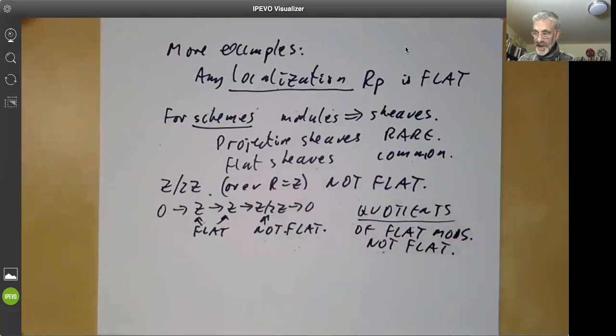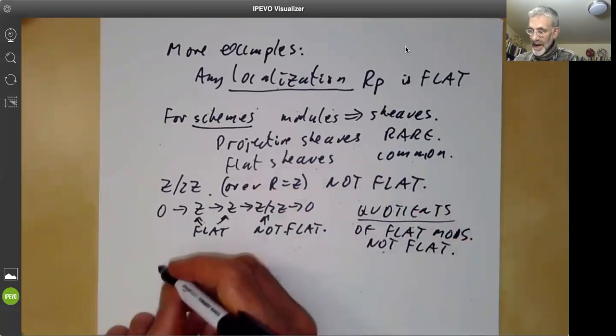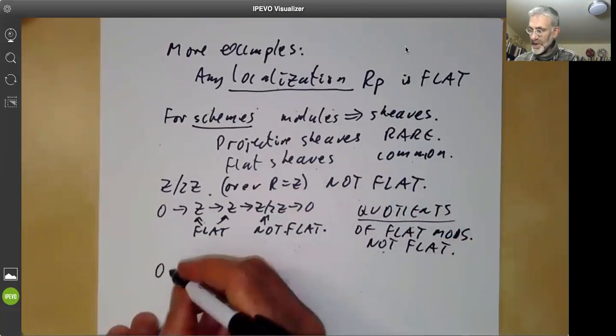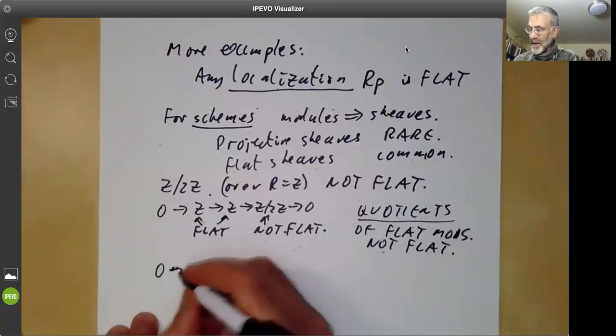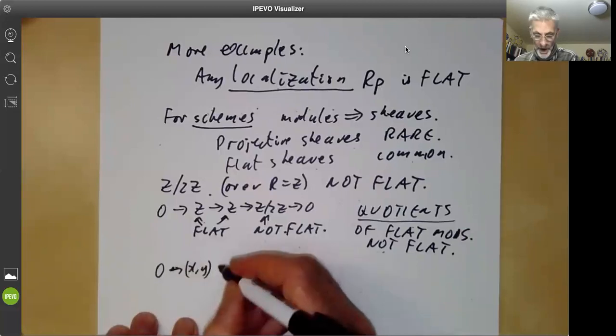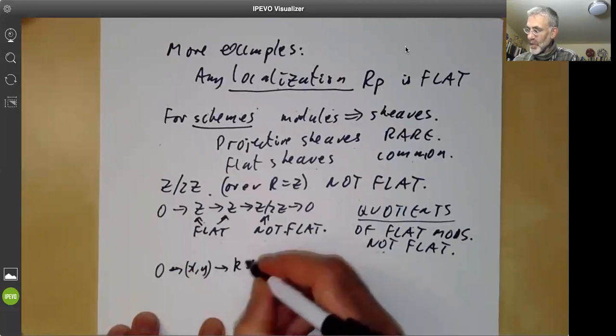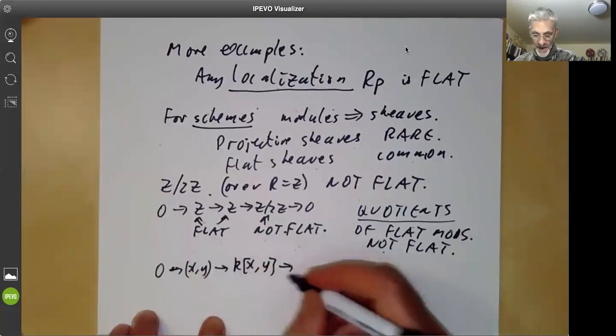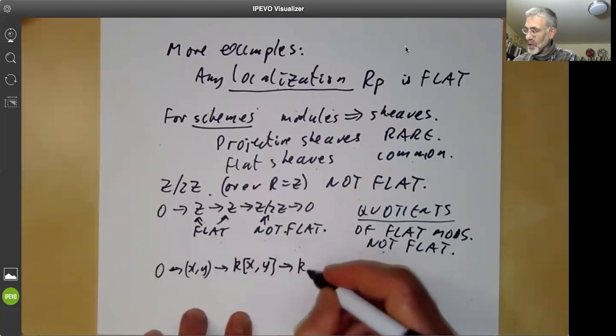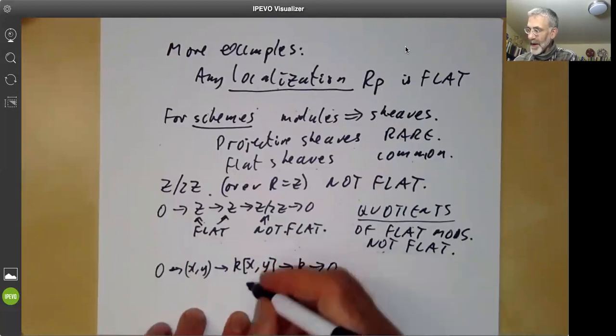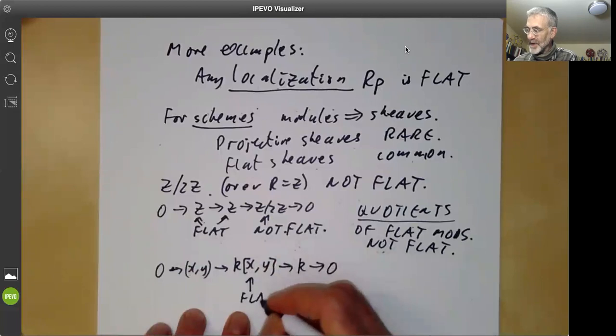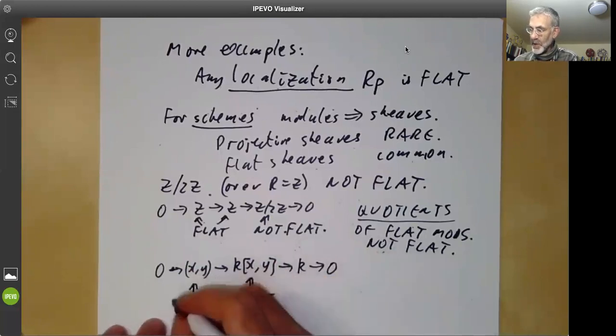You can also ask, are submodules of flat modules flat? And again, the answer is no in general. For instance, we could take the ideal generated by x and y, and this is an ideal of the polynomial ring in two variables, and the quotient is just k. And here this module is flat because it's free, and this is not flat.